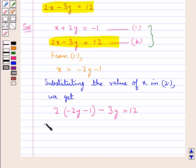This further gives us minus 4y minus 2 minus 3y is equal to 12. Now we have minus 4y minus 3y is minus 7y is equal to 12 plus 2. We transpose this minus 2 to the right-hand side.